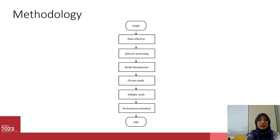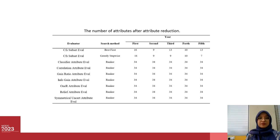After attribute reduction, we do model development where we implement Hellinger distance as the ACO heuristic. We then feed the data into our proposed model and also into ACO-minor, because we use ACO-minor to compare results with our proposed model. At the end, we validate the result using 10-fold cross-validation, and for performance evaluation we use F-score.